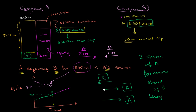We saw that if everyone thought this transaction was going to happen, theoretically, whatever A is trading at, B should trade at twice that. Because people know that when the transaction happens, they'll be able to trade in one share of B for 2 shares of A. This is the theoretical trading price: 2 times A. But what happens if B doesn't trade there?